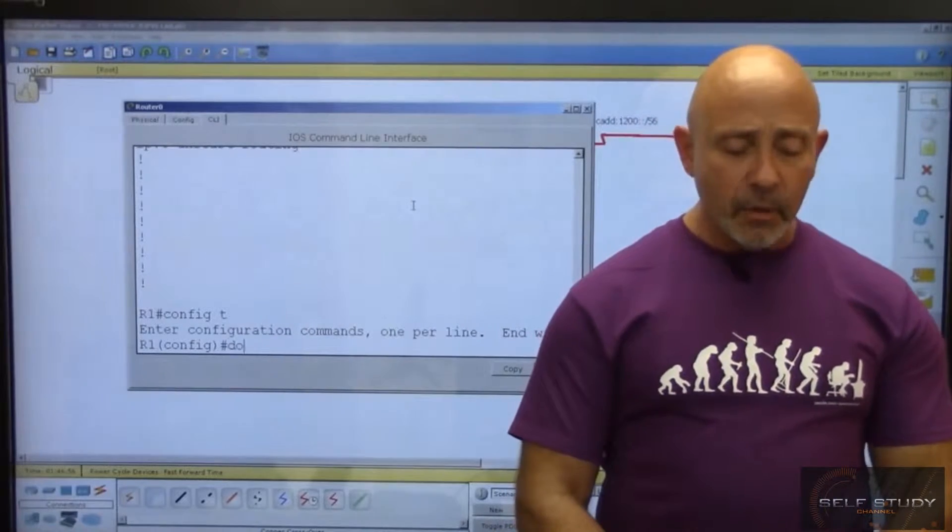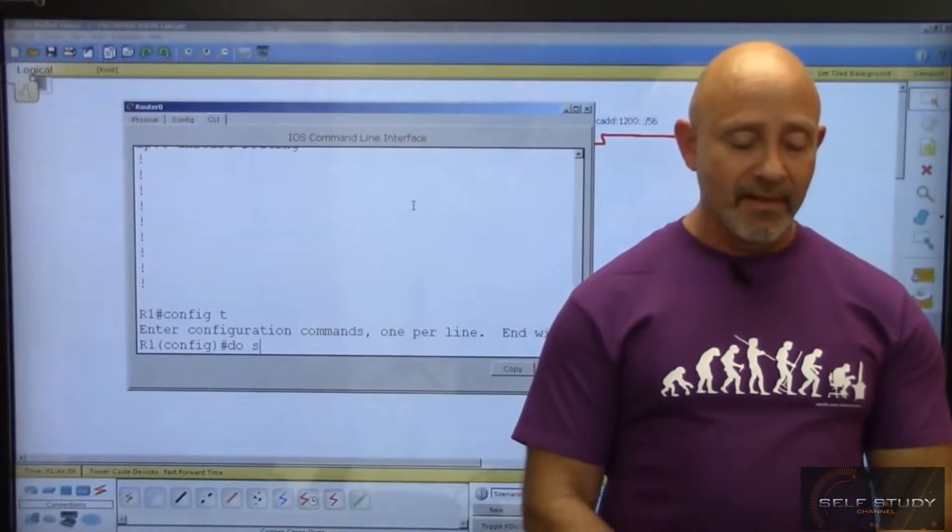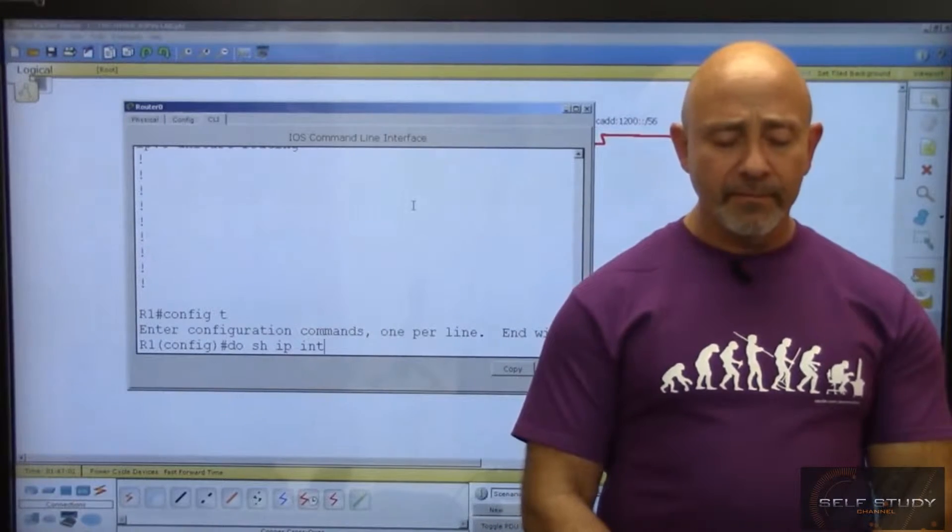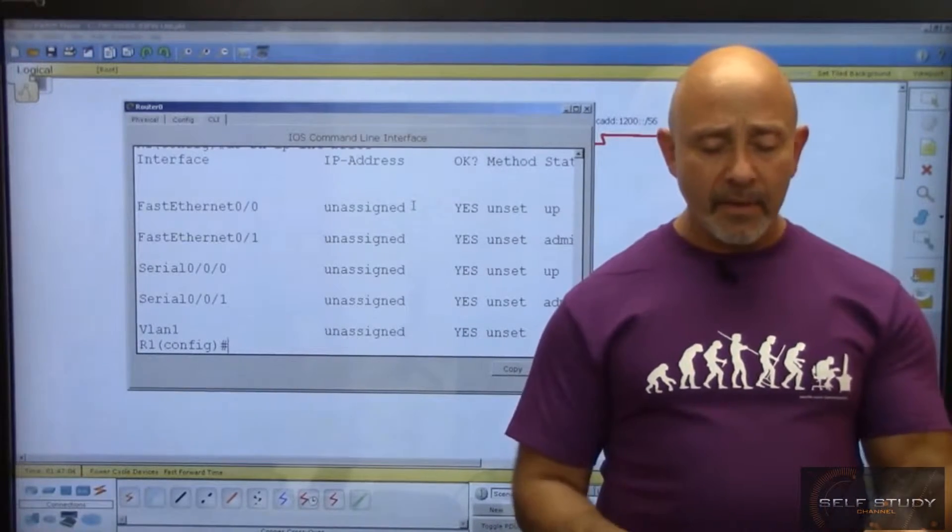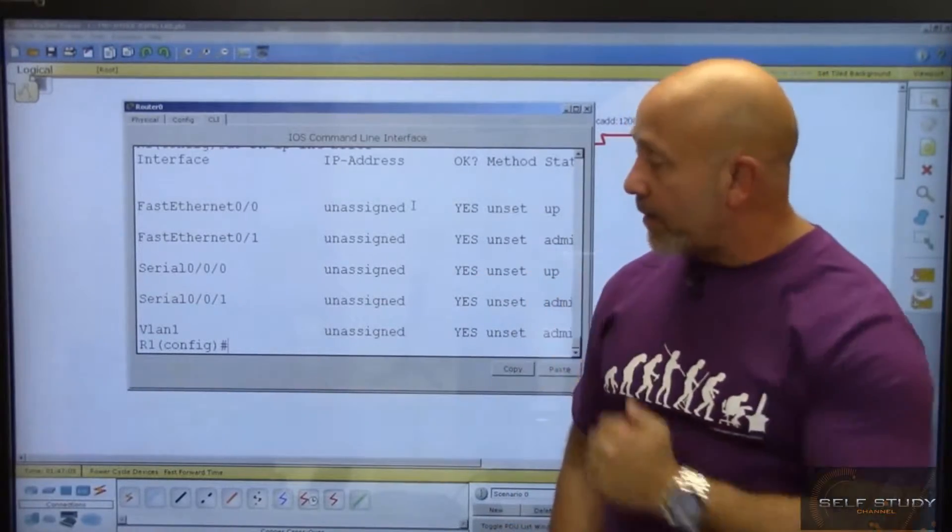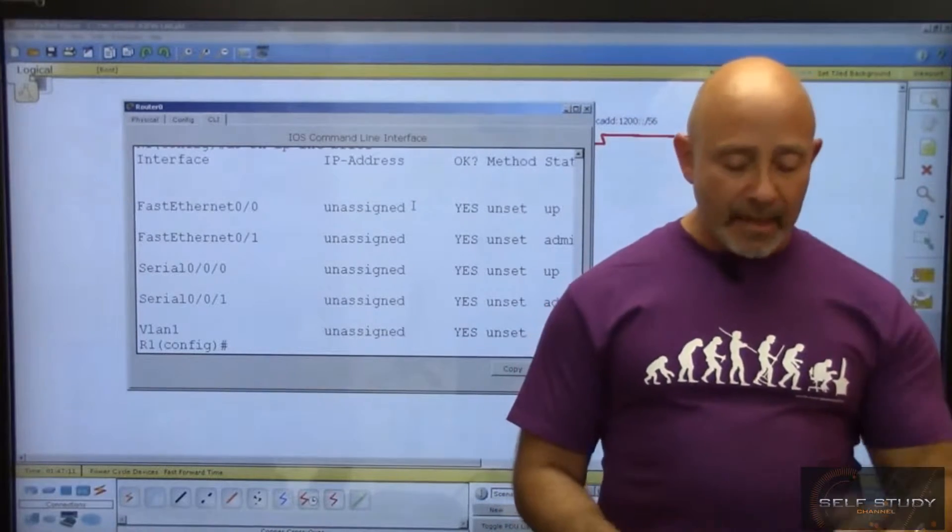So I'm going to do a 'do' which you can't do in the test, show IP int brief. These are my IP addresses or my interfaces, that's what I want to see. I'm going to the F0/1 interface, that's where I attached that PC to.